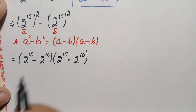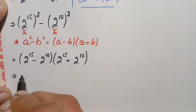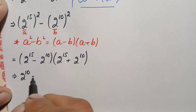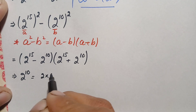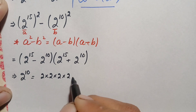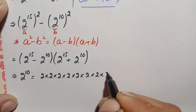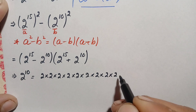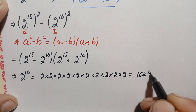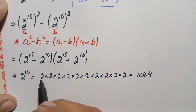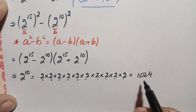Now we will find the value of 2 raised to power 10 and 2 raised to power 15. For 2 raised to power 10, we multiply 2 ten times: 2×2=4, 4×2=8, 8×2=16, 16×2=32, 32×2=64, 64×2=128, 128×2=256, 256×2=512, 512×2=1024. So 2 raised to power 10 equals 1024.